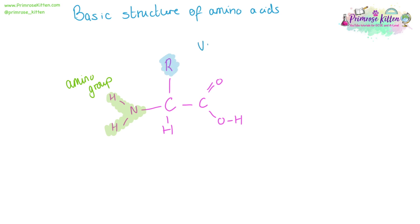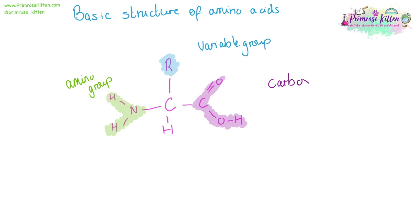The R-group at the top is variable — this is different between every amino acid. And then the group on the right-hand side — the carbon double bonded to an oxygen, bonded to oxygen, bonded to hydrogen — is the carboxylic acid group, the acid part of the amino acid name.